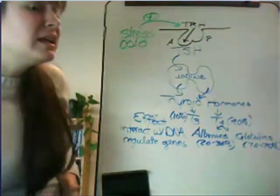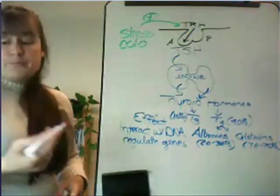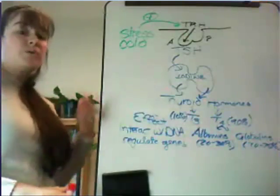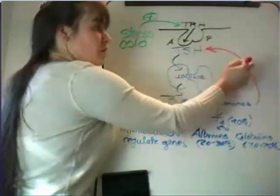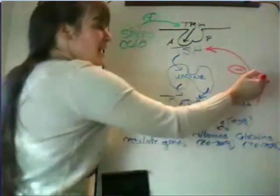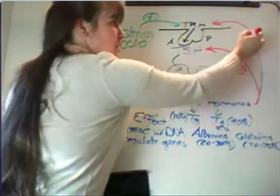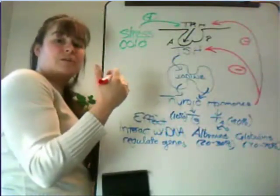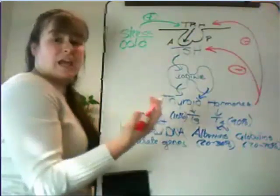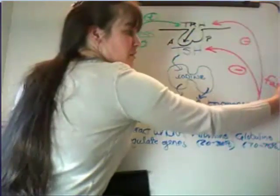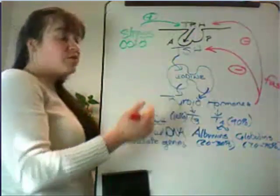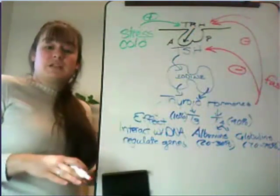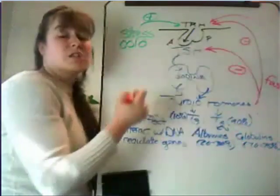A couple of things inhibit thyrotropin-releasing hormone. First, there is a negative feedback loop associated with thyroid hormone. When thyroid hormones elevate, they turn off thyroid-stimulating hormone — having a negative effect on the anterior pituitary — and they also have a negative effect on thyrotropin-releasing hormone itself. So there are two points that help turn off the system at both the anterior pituitary and the hypothalamus. Additionally, if a person goes through a phase of fasting with decreased food consumption, overall metabolism decreases, and fasting also inhibits the release of thyrotropin-releasing hormone.